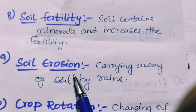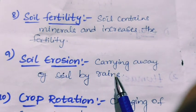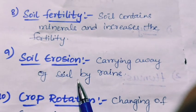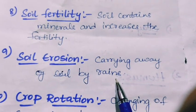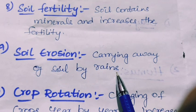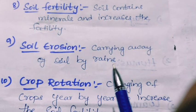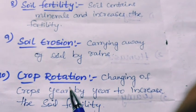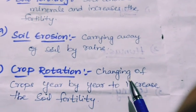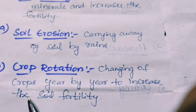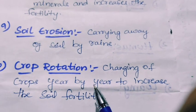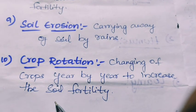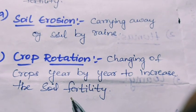Soil erosion: the carrying away of soil by rains or flowing water. Crop rotation: changing of crops year by year to increase the soil fertility.